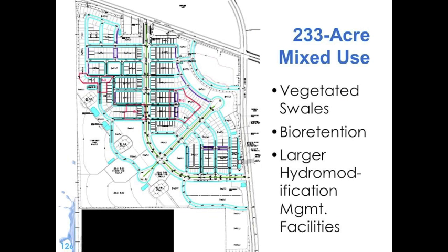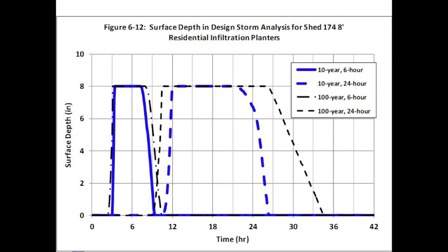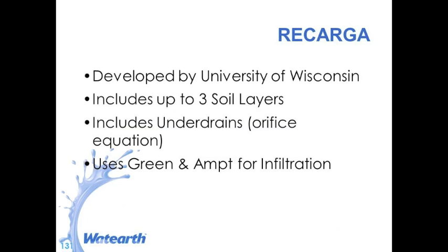Here's a 233-acre mixed-use site. Everything in turquoise is essentially bioretention, just differing in how it's configured and arranged. You can see runoff hydrographs from the various drainage areas, the surface depth within bioretention filling up for all of these events, and drain rock depth filling up and draining down.